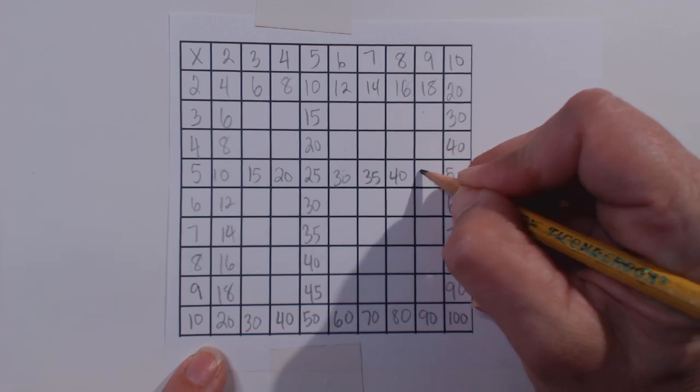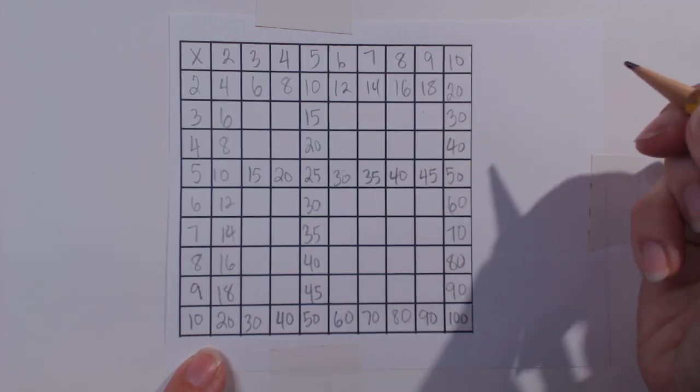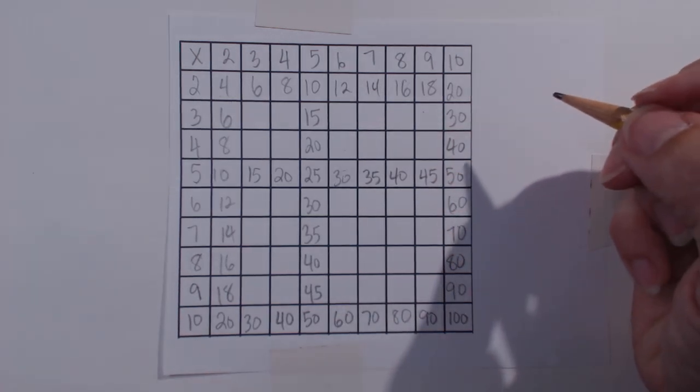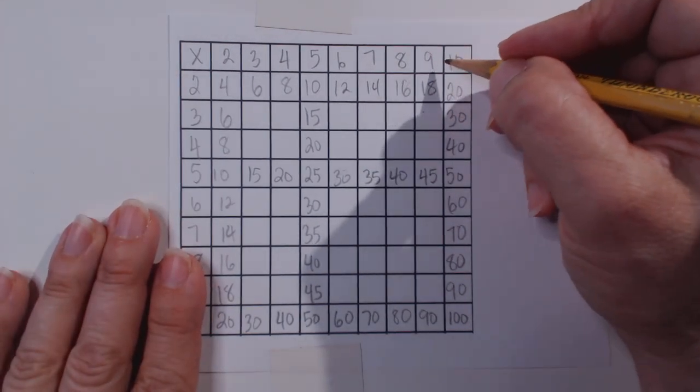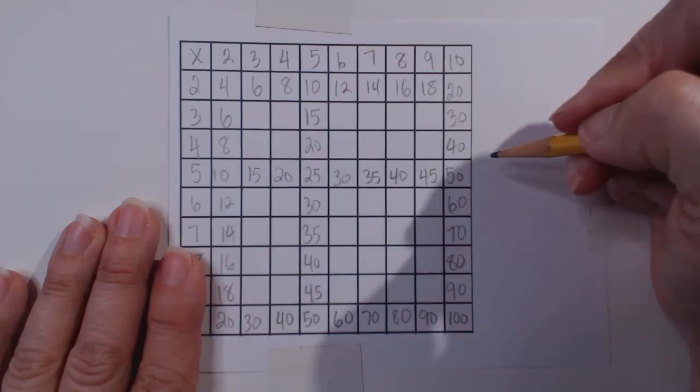Doing the down and cross method for each fact as you go really ensures to have your facts accurate on this chart. So we did our easy skip counting facts down and across.